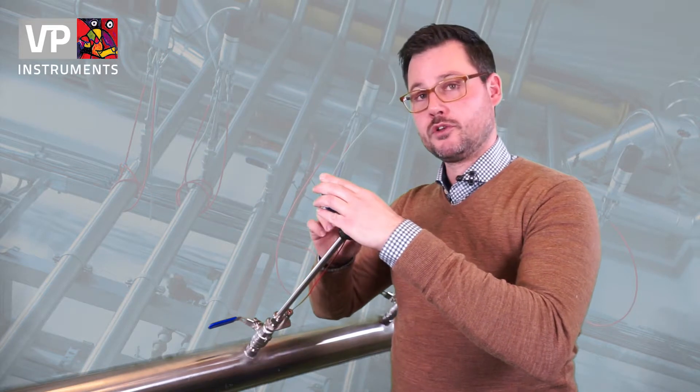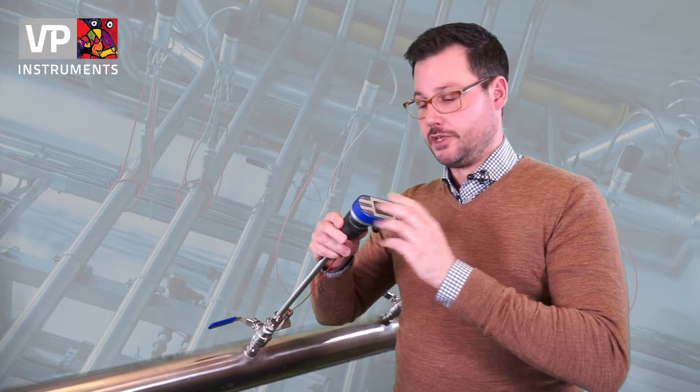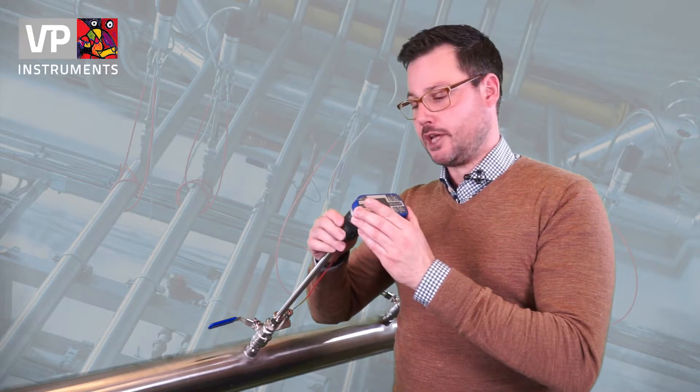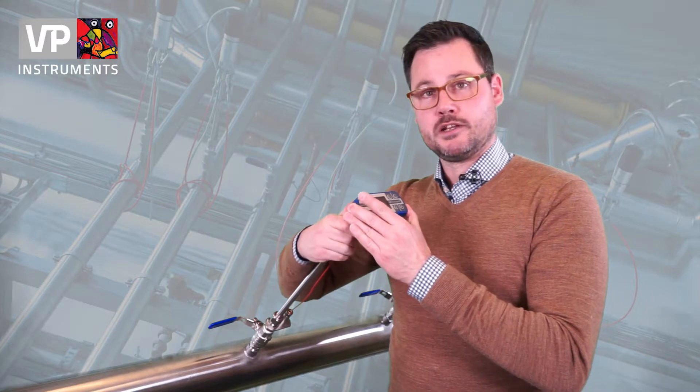Just by loosening the locking ring, I can turn this 360 degrees. I like it in the same position as the flow inside the pipe. So I mount it exactly like this.